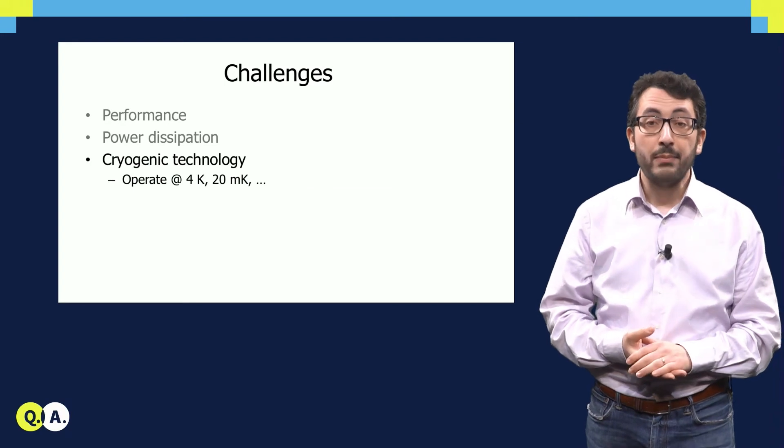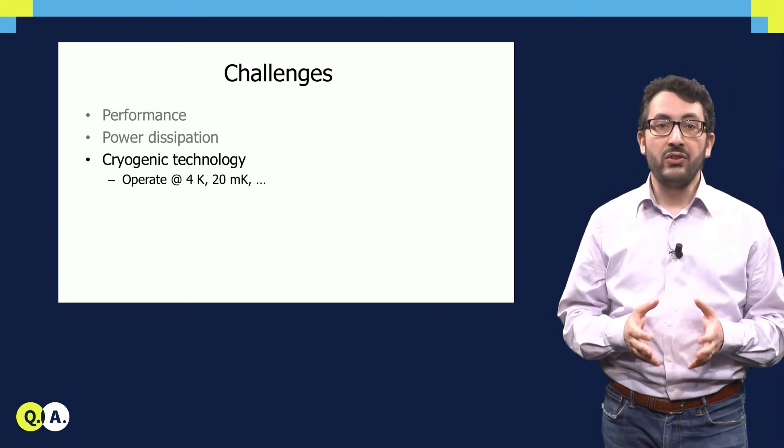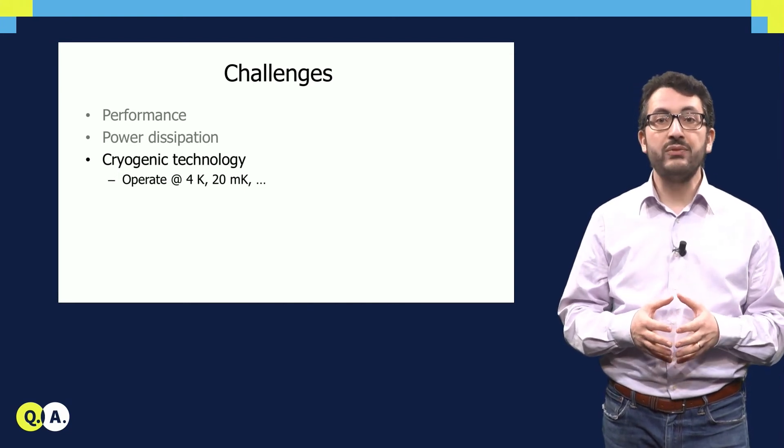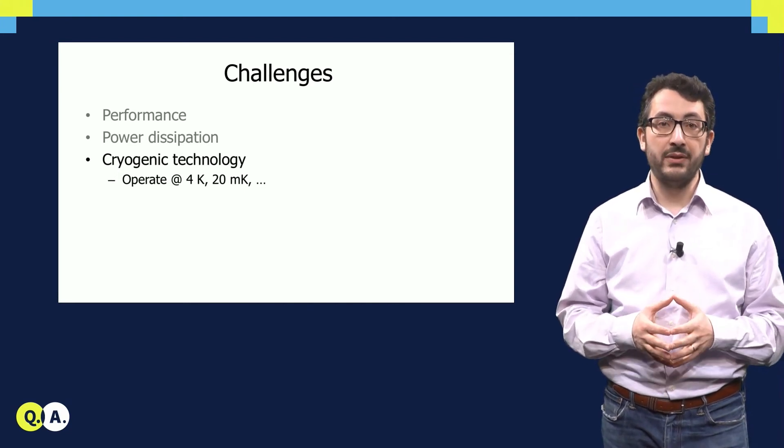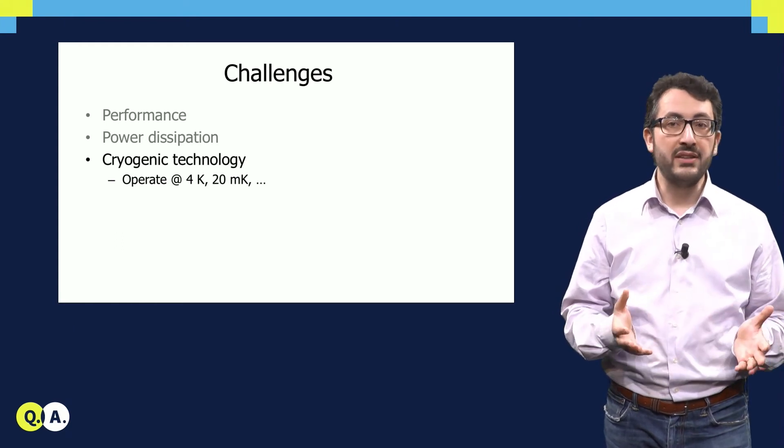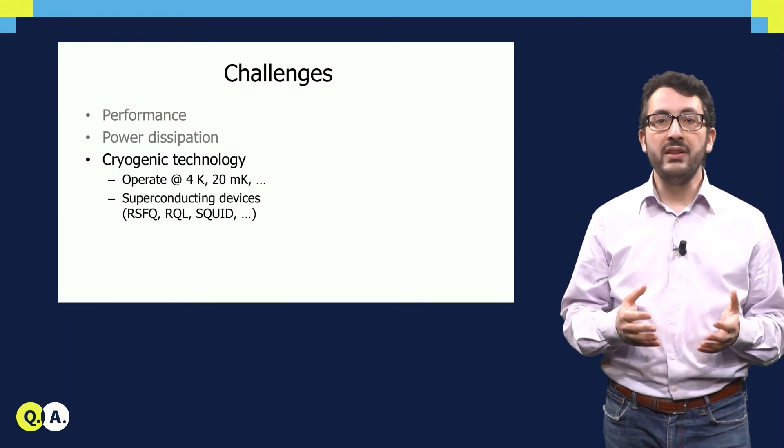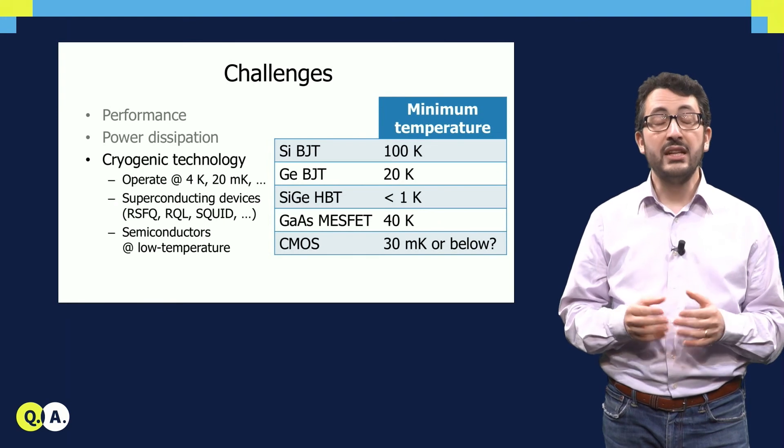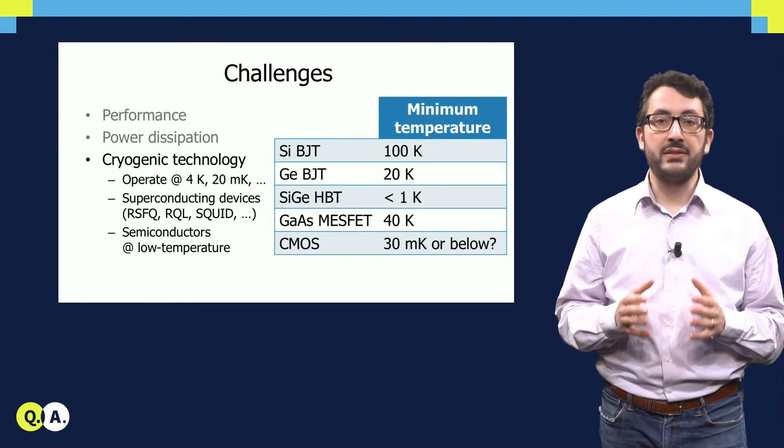Finally, but also very important, we need to build these electronics with a technology that can work at cryogenic temperature, as low as 4K or even 20 mK. You have different options because you can use superconducting devices or any semiconductor operating at low temperature. Here you see a number of examples. The challenge is to choose the best technology.